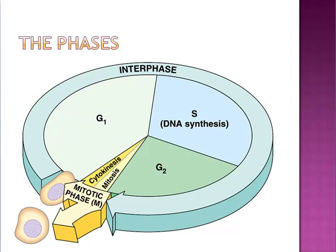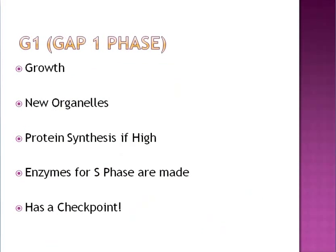As you can see from the picture, G1, S, and G2 collectively make up what's called interphase. This is where a cell spends about 90% of its life. The G1 or Gap 1 phase is mainly just the daily life of the cell.